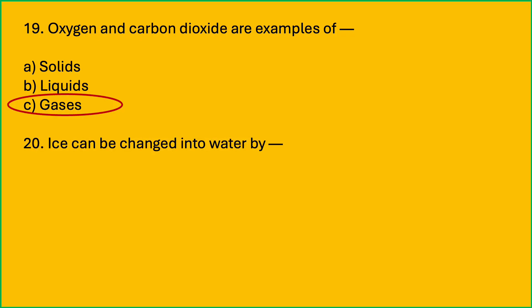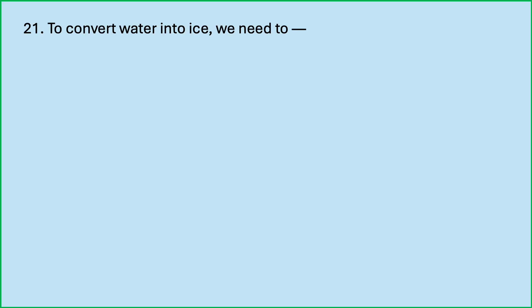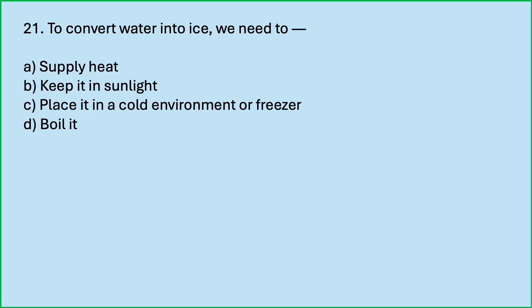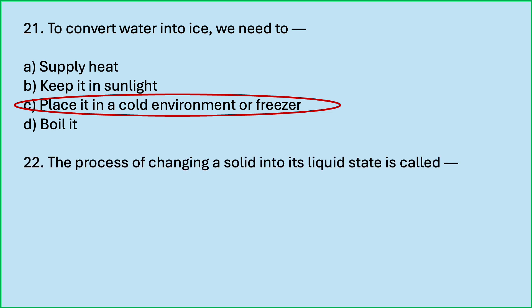Ice can be changed into water — why? Options are: cooling it further; supplying heat to it; freezing it; keeping it in a cold place. Correct answer is supplying heat to it. By supplying heat to ice, we can change ice into water. To convert water into ice, we need to place it in a cold environment or freezer.